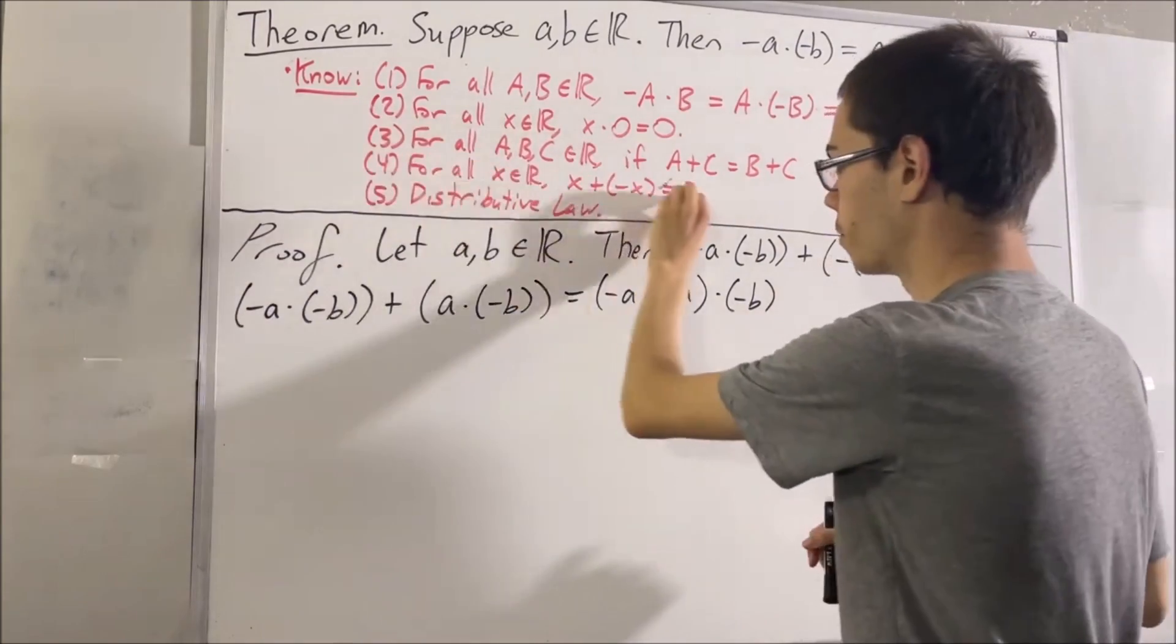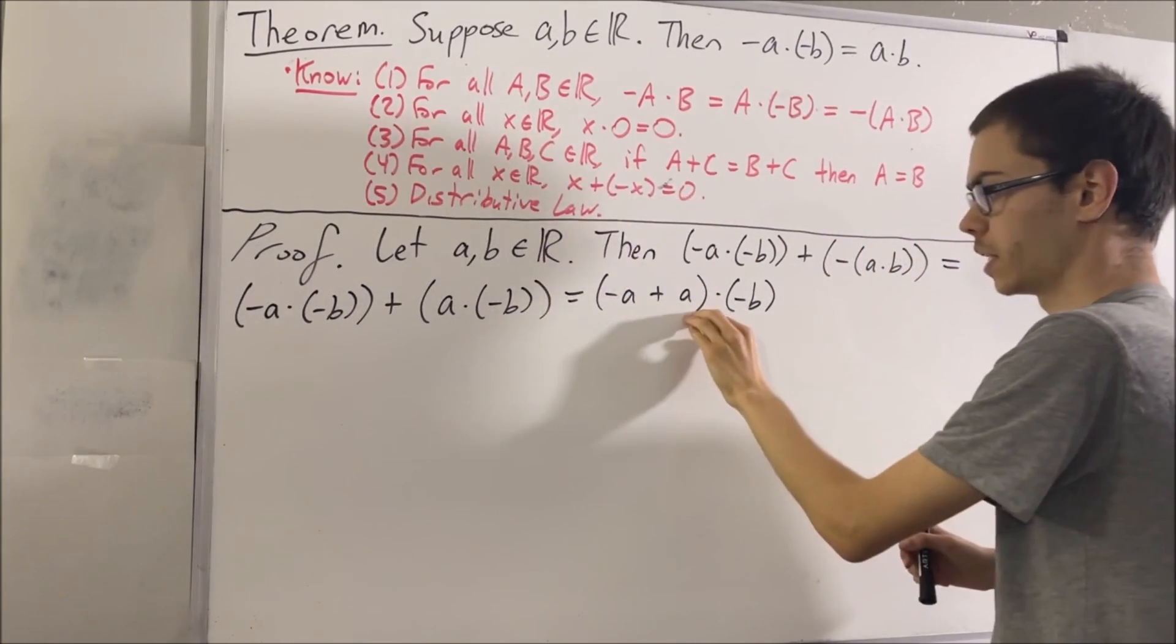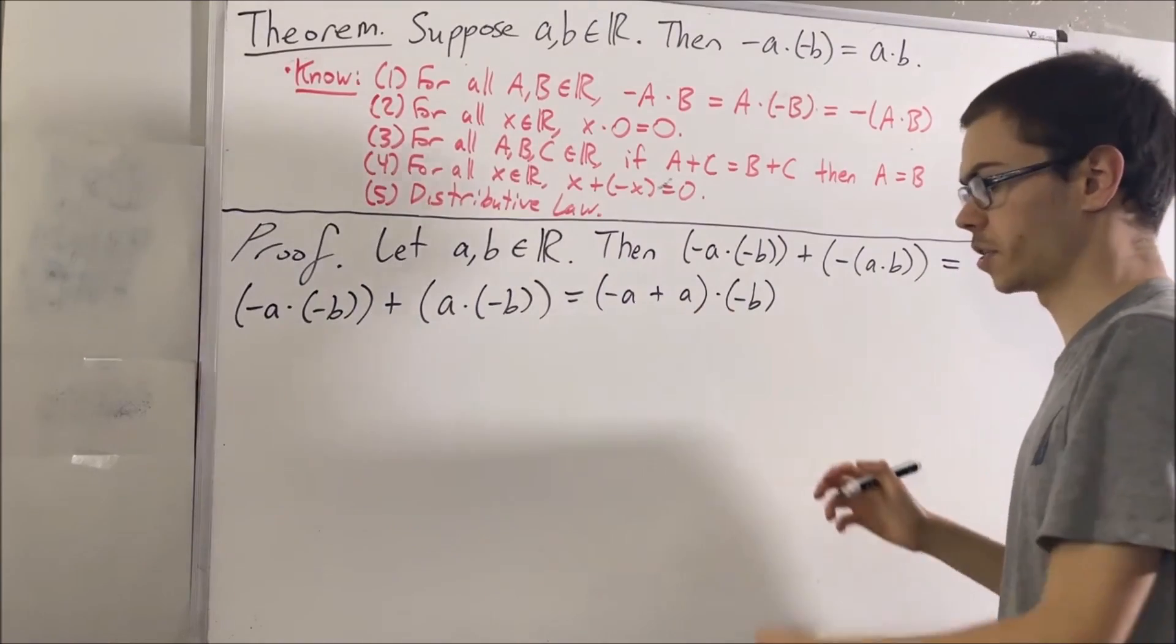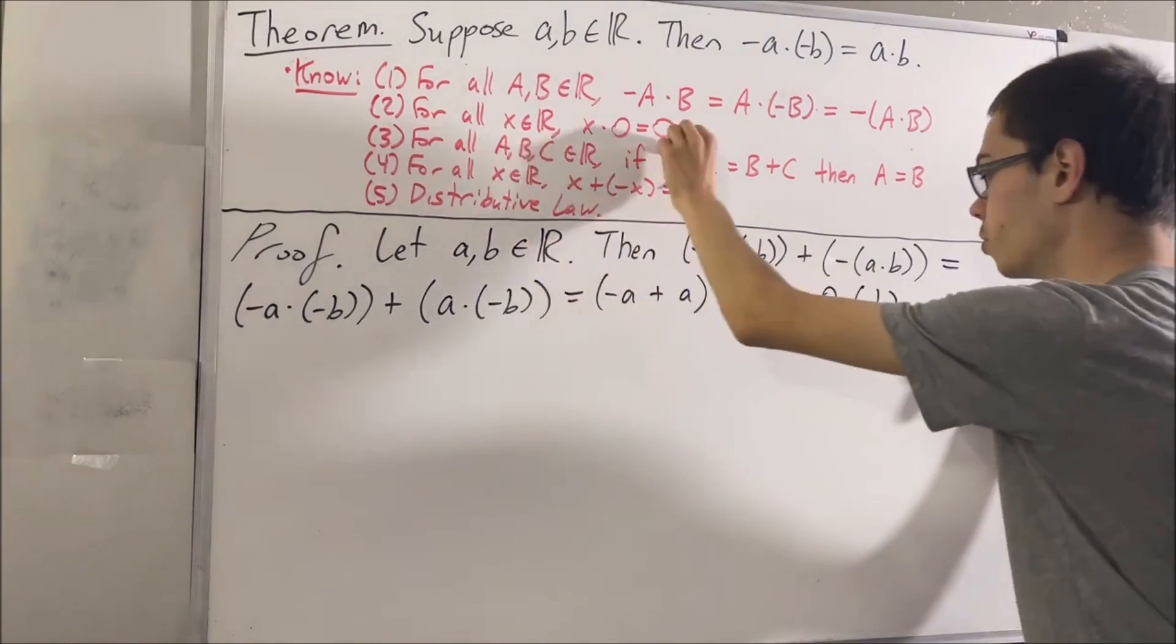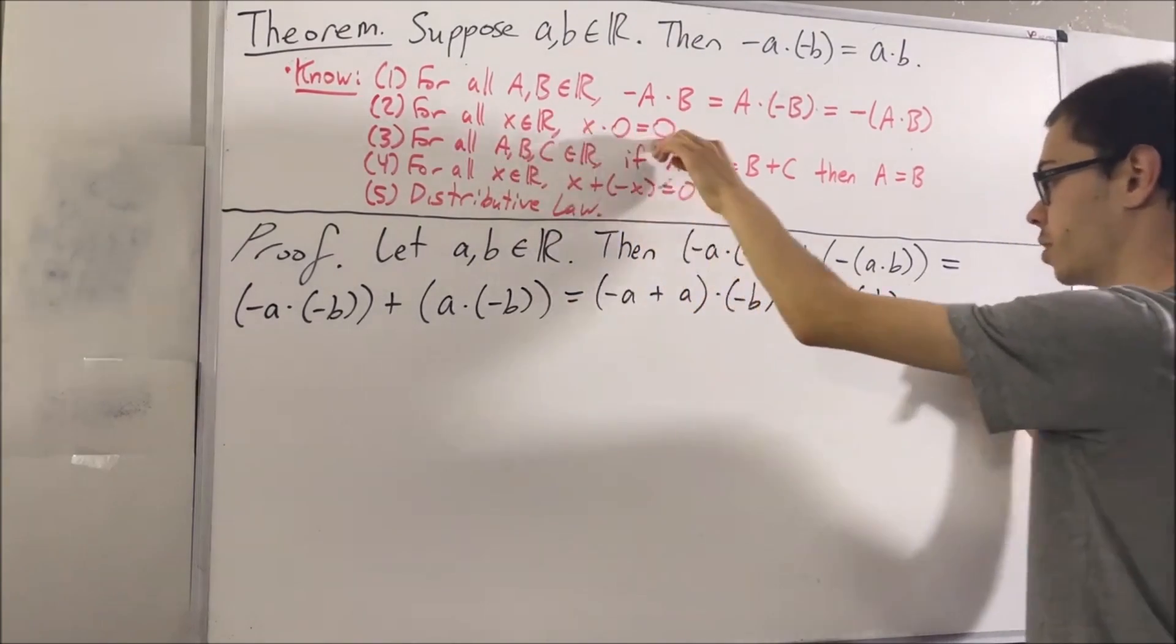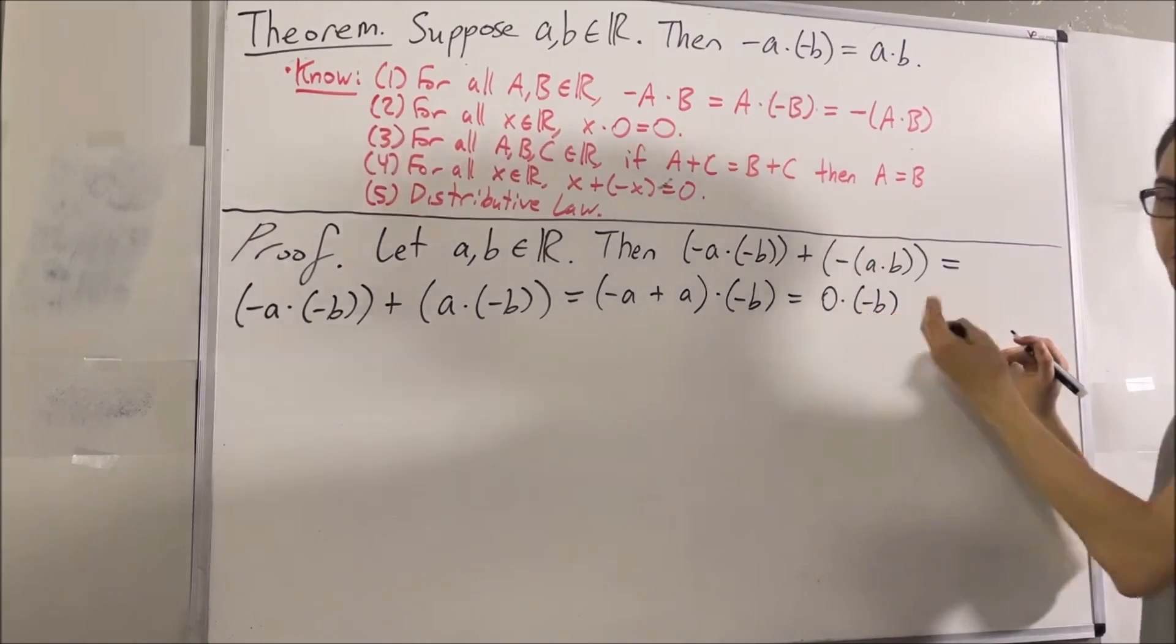Now notice, by fact number four, the negative A plus A is equal to zero. I should note we are implicitly using the commutative law here. But now, by fact number two, any number times zero is equal to zero. So zero times the negative B is zero.